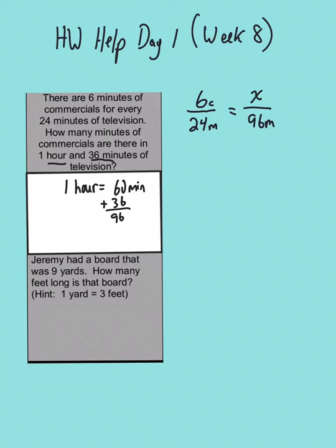Next, we need to solve this. So I know if I multiply 24 times 4, we get 96. So if I do 6 times 4, we'll get 24 minutes of commercials. And that's your answer to the top one.